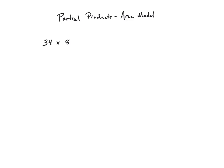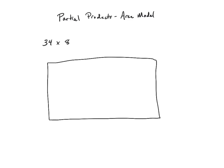To set up the area model for partial products I'm going to draw a 34 by 8 rectangular array, and I'm going to just sketch this out as a large rectangle. So this rectangle is going to be 34 across the top and 8 across the side. But I'm going to write 34 in expanded form, so I'm going to make this be 30 plus 4 across the top, and go ahead and divide this up. The 4 would be somewhere over here — I'm not going to divide it exactly accurately.